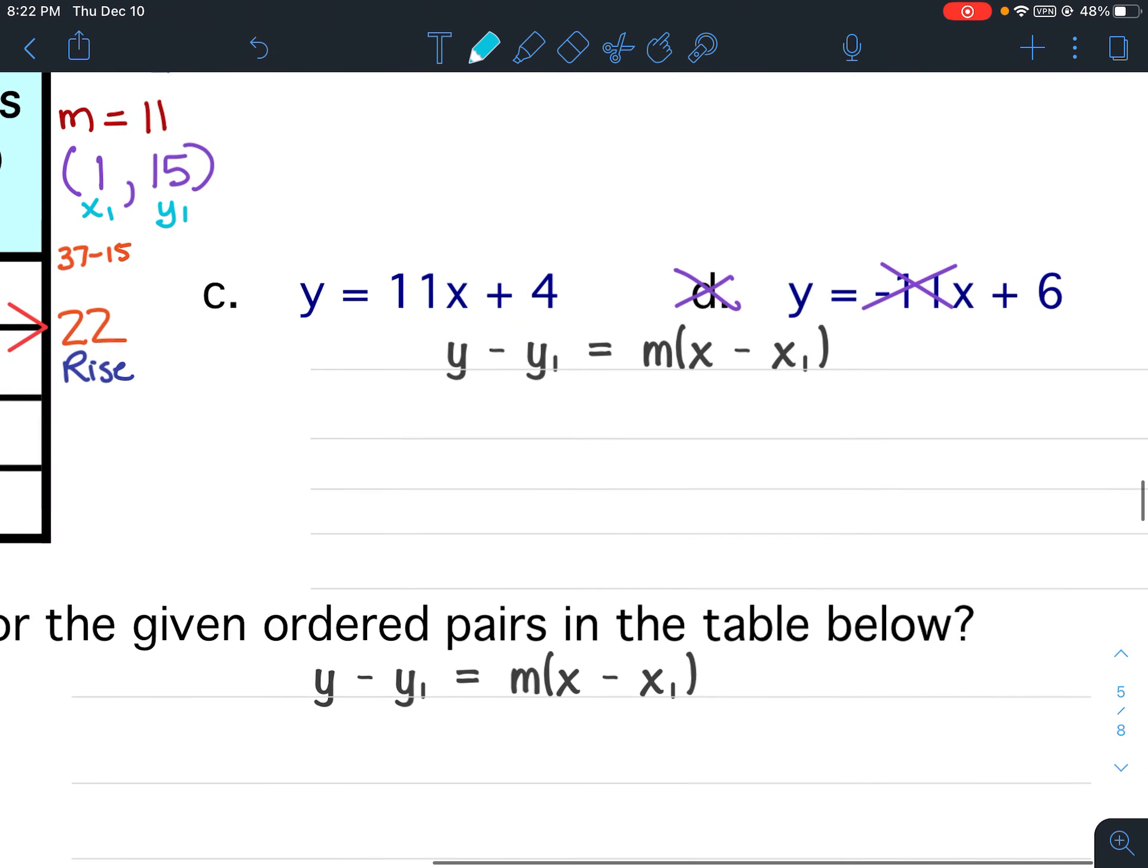All right. By writing it there, it allows me to blow it up a little bit. So we've got y and then the opposite of y1. Y1 is positive 15, so negative 15. Then I need my slope. My slope is 11. x and then opposite of x1. x1 is positive 1, so the opposite of it would be negative 1.